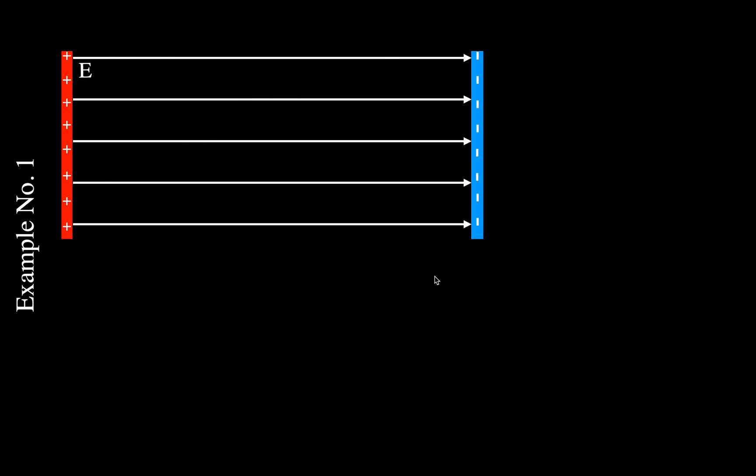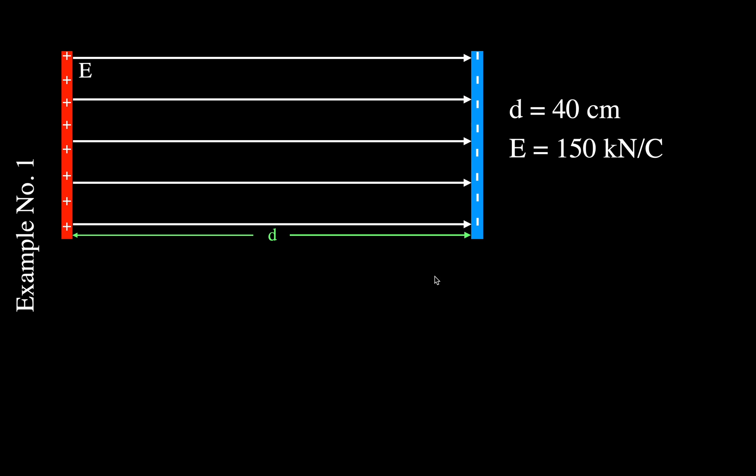This is example number one. We have two parallel plates — a positively charged plate and a negatively charged plate — and between them we have a uniform electric field going from the positive plate to the negative plate. The distance between the plates is 40 centimeters, the electric field strength is 150 kilonewtons per coulomb, and we place a charge of two millicoulombs in the middle of that field.